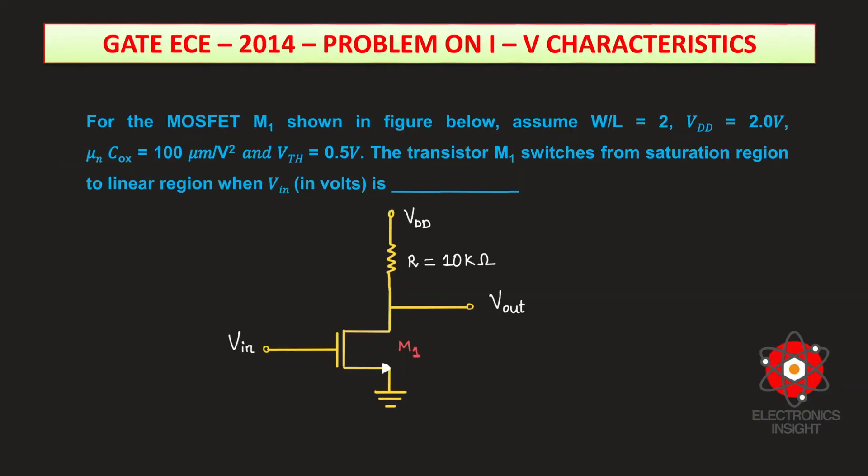The problem statement says that for the MOSFET M1 shown in the figure, assume W/L ratio of 2, VDD supply voltage is 2 volts, μₙCₒₓ = 100 μm/V², and threshold voltage Vth = 0.5V.